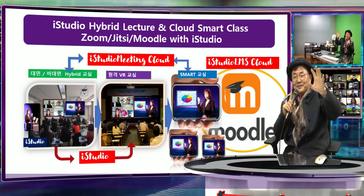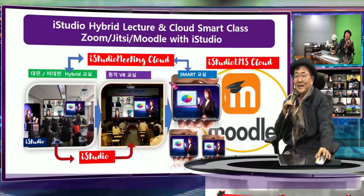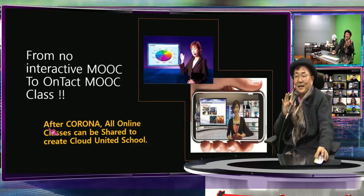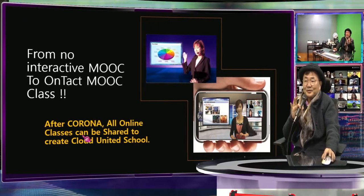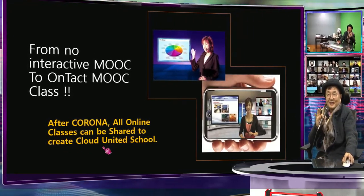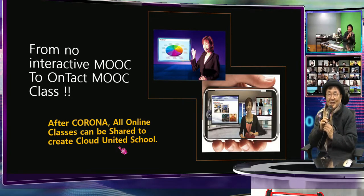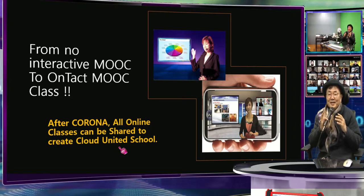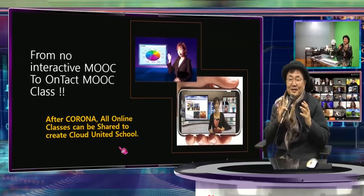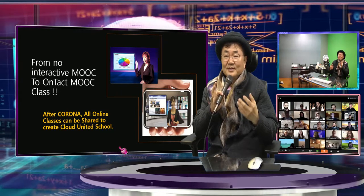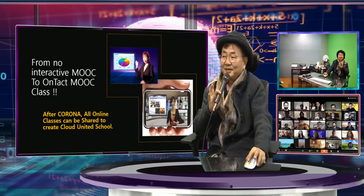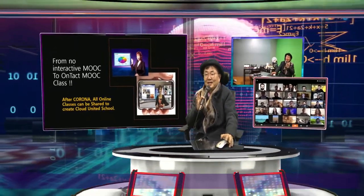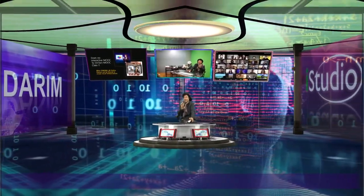Once you put this in the classroom in the cloud, it can be shared by all — that's why we say this is the way to make an on-context MOOC class. The classroom can be open to everybody. After Corona, all online classes everyone is doing now can be shared to create a cloud classroom — Cloud United Schools. Just as after World War II everyone started talking about the world being one and created the United Nations, without any formal association every school and every teacher is now creating cloud content, cloud classrooms, and cloud courses. This will really make a new platform for the universe.